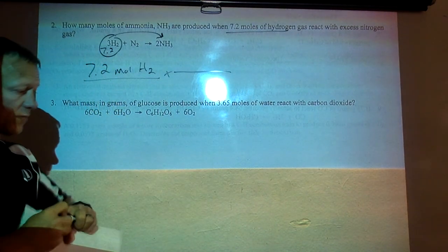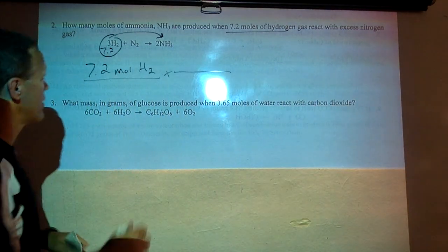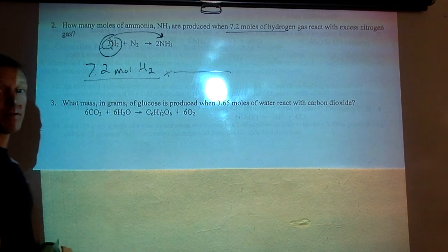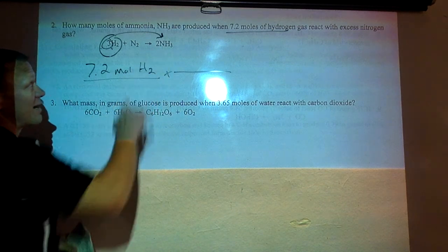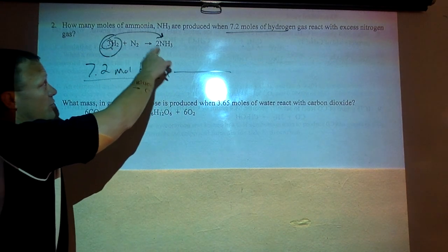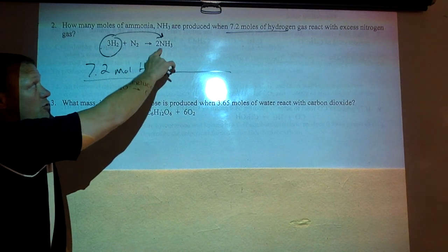So we always start with what they give us is 7.2 moles of H2. If we start with moles our next step will always be our ratio. So our ratio here is for every three moles of H2 that are used in the reaction there's two moles of NH3 produced.